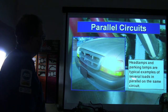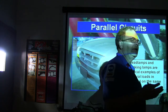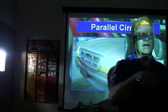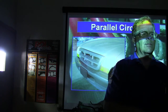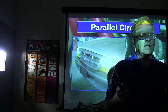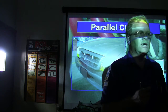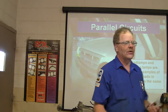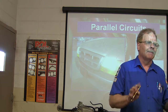Headlamps and parking lamps are a typical example of several loads in the same parallel circuit, although headlamps are typically on their own feed. The way a headlamp switch is usually wired, one feed comes into the headlamp switch and goes out to the headlamps, and another feed from another fuse goes out to the park lights. A lot of the time you'll have a fuse for each headlamp. In the old days, there was a circuit breaker built into the headlight switch that you couldn't change.